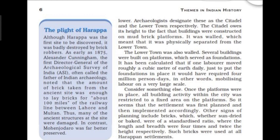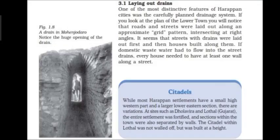Other signs of planning include bricks — both sun-dried and baked. Bricks were made in a standardised ratio where the length and breadth were four times and twice the height respectively. The drainage system was also carefully planned. Roads and streets were laid out along an approximate grid pattern, intersecting at 90 degrees. Street drains were connected to house drains.